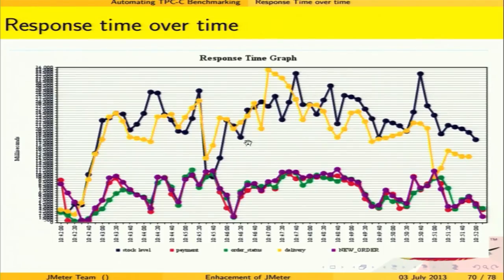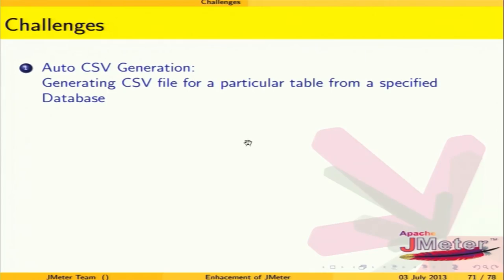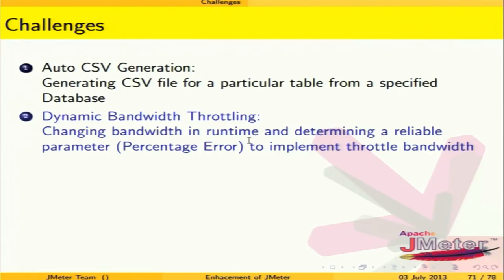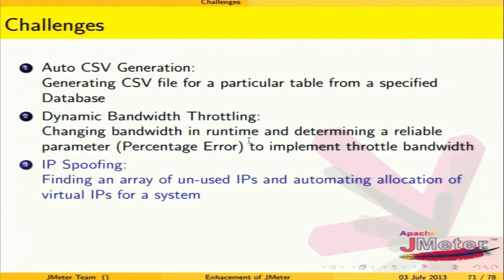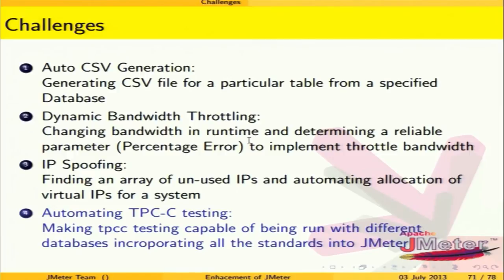The transactions-per-second graph shows what transactions were fired at each moment over 10 minutes. The aggregate graph shows mean, median, average, and 90th percentile response times. A response-over-time graph shows different response times for each transaction. Challenges included JMeter's complex structure with over 5000 classes, getting values directly from the database for auto CSV generation, making runtime changes to JMeter for dynamic bandwidth throttling, determining valid IPs for IP spoofing, and creating TPCC-compliant test scripts for separate databases.